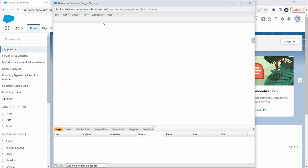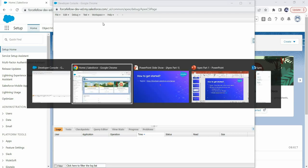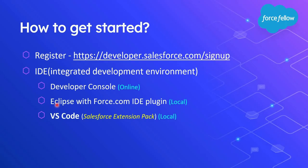The Developer Console is an online IDE that works only with an active internet connection. If you want to use a local offline IDE, there are multiple options such as Eclipse and VS Code. The most preferred and popular local IDE is VS Code with the Salesforce Extension Pack. However, since Apex can only compile and run on Salesforce servers, after writing code locally you still need to deploy it to the Salesforce platform to compile and test — you cannot run Apex on your local system.